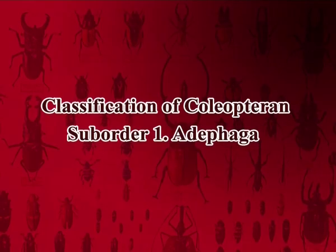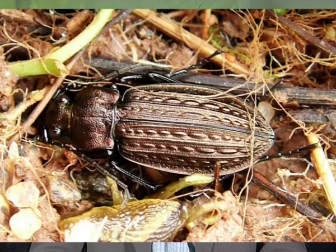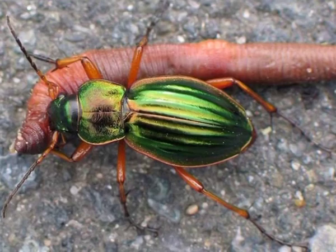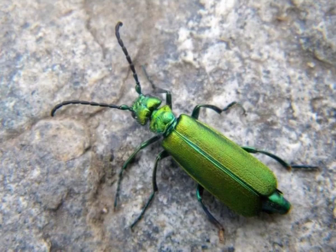Classification of Coleoptera. The first suborder is Adephaga. Here, the wing venation usually includes the oblongum. They have the first visible abdominal sternite divided by the fixed, backwardly projected metathoracic coxae. Notopleural suture is visible on the lateral ventral sides of the thorax. The tarsal segments are 5-5-5. Both terrestrial and aquatic forms, and mostly predaceous. Larvae are both terrestrial and aquatic.